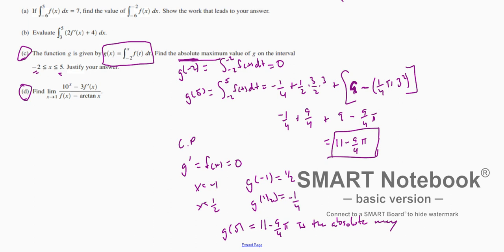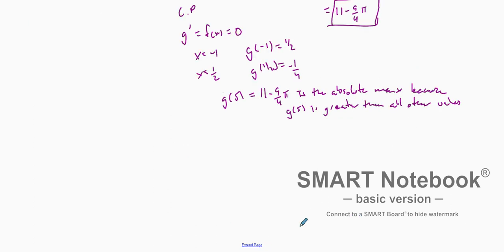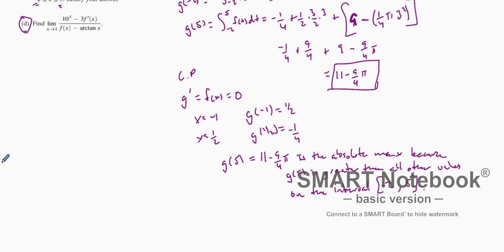G of 5 equals 11 minus nine-fourths π is the absolute maximum because G of 5 is greater than all other values on the interval from negative 2 to 5. We prove this by testing all critical points and all endpoints, and that gives us our answer.